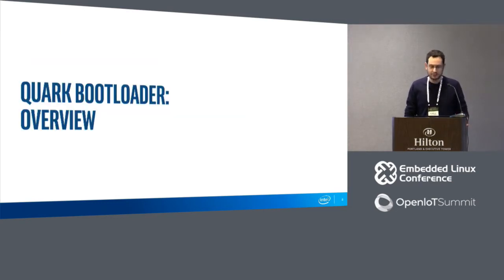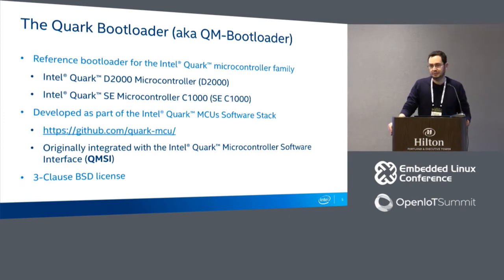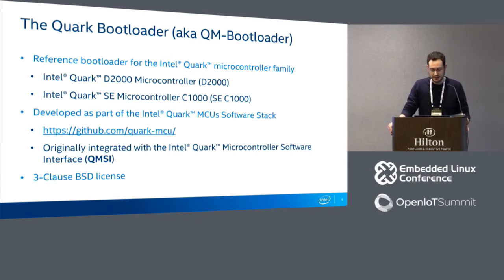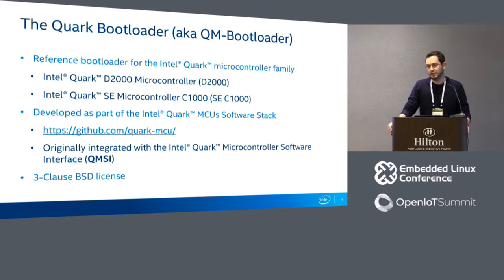The Quark bootloader is the reference bootloader for the Intel Quark microcontroller family, which includes the Intel Quark D2000 microcontroller and the Intel Quark SE microcontroller C1000. The bootloader is developed as part of the software stack for this family of microcontrollers, available on GitHub and released under a 3BSD license.